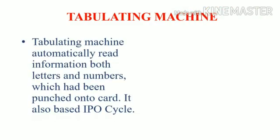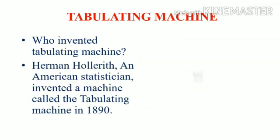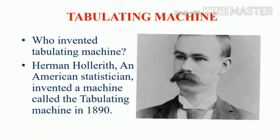Tabulating Machine. The Tabulating Machine automatically read information — both letters and numbers — which had been punched onto cards, and also supported the IPO cycle. Herman Hollerith, an American statistician, invented the Tabulating Machine in 1890.